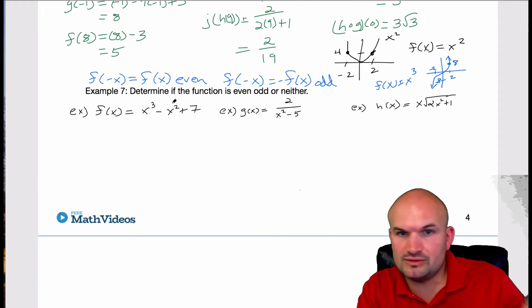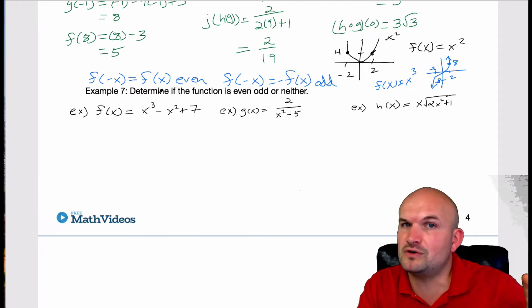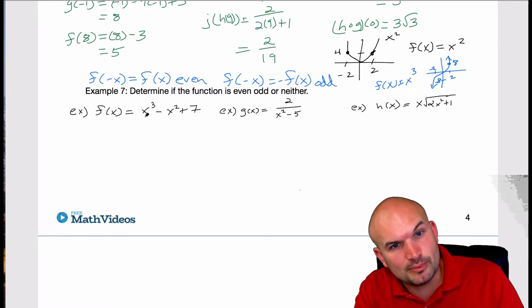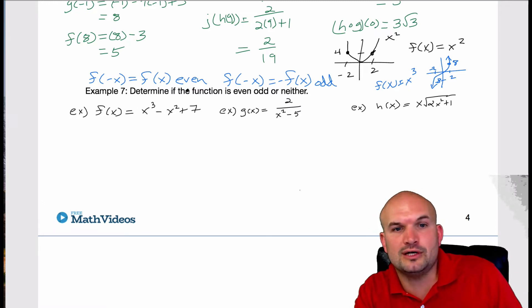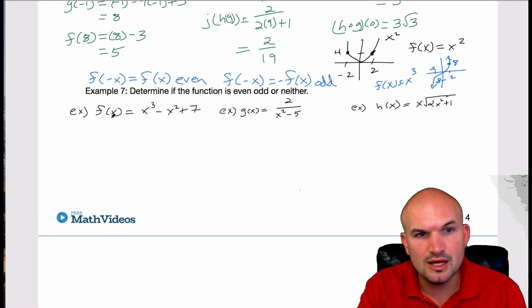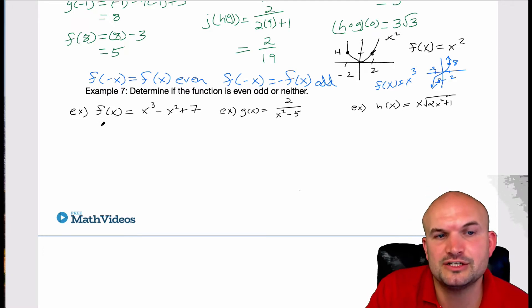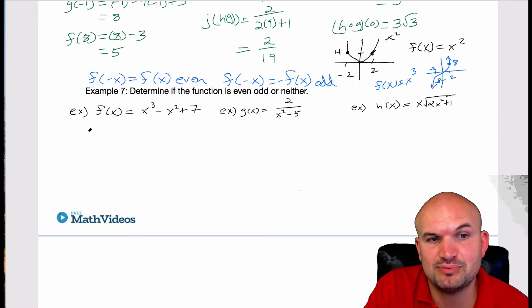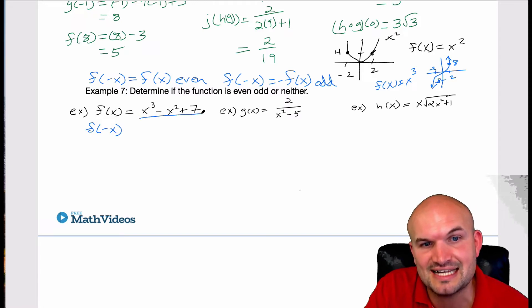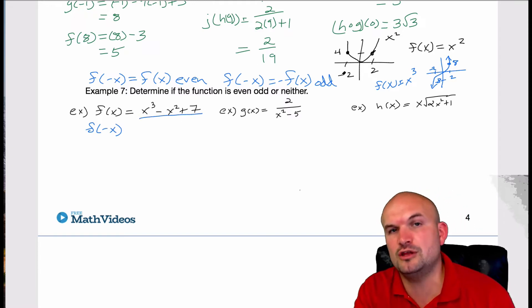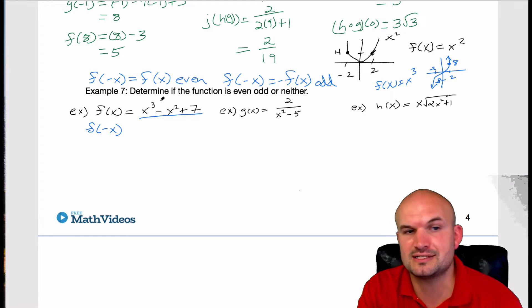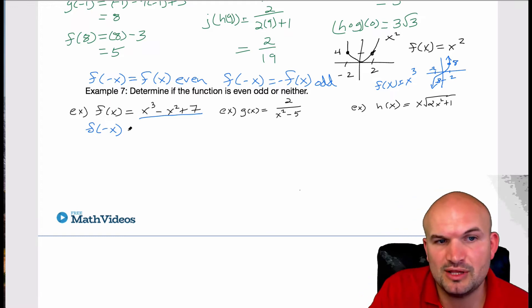Algebraically, we don't need to look at the graphs for any of these. It's nice to be able to pull up a graphing calculator and see how it looks, but we don't need to. All we simply need to do — like our warm-up — is plug in f(negative x) and evaluate. If it gives us the exact same function back, we know that it is symmetrical about the y-axis. So, let's plug in negative x.